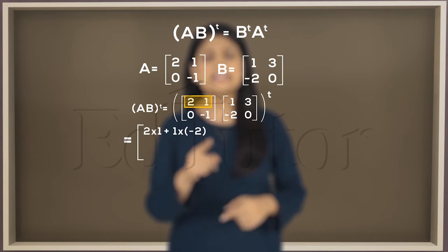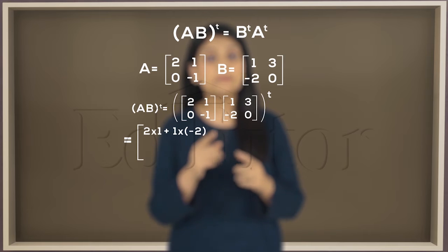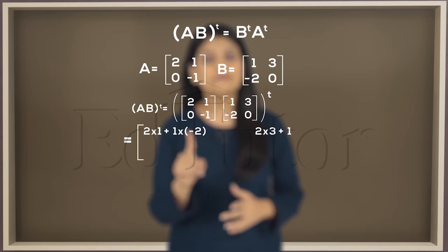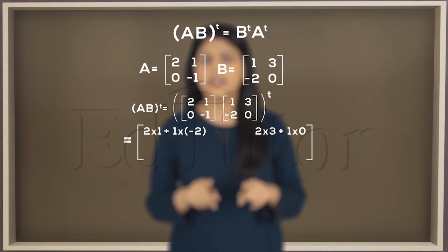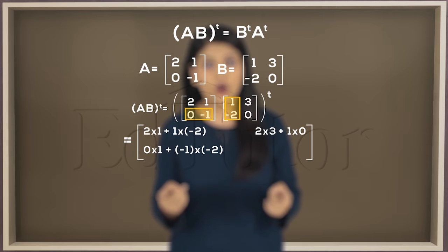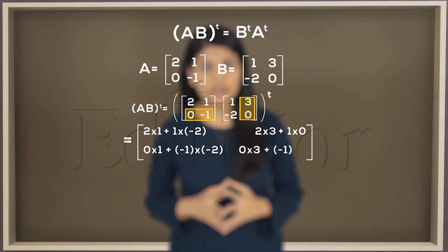Similarly, take the first row second column and multiply 2 with 3 and 1 with 0. Now take the second row first column then the second row second column.